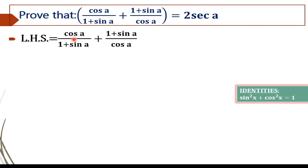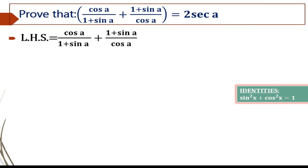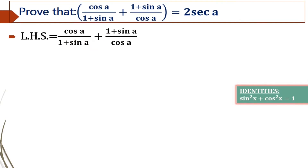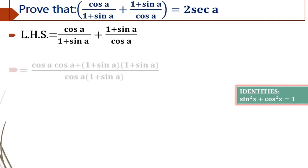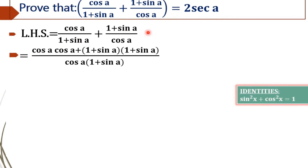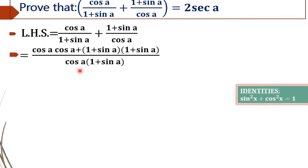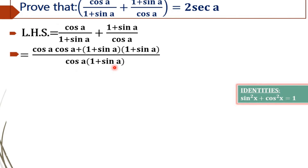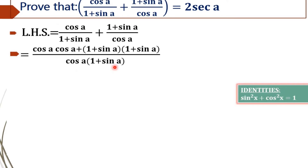In order to simplify this LHS, we are going to cross multiply the terms, that is by taking LCM. Now we will get cos A into cos A plus 1 plus sin A into 1 plus sin A, whole divided by cos A into 1 plus sin A, after cross multiplying.